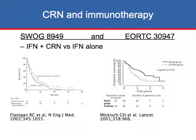Cytoreductive nephrectomy was first evaluated in the immunotherapy era, with two publications from 2001. These were randomized prospective studies — the gold standard — which compared immunotherapy with removal of the kidney versus immunotherapy alone. In both trials, the arm with surgery plus immunotherapy shows a separation of the curves above the immunotherapy-alone arm, indicating that patients who had the nephrectomy in addition to immunotherapy had a better outcome. Hence, cytoreductive nephrectomy became part of the standard of care for metastatic disease.